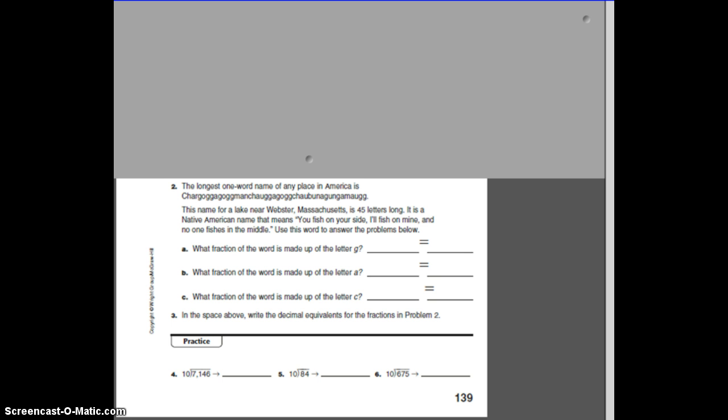So, what fraction of the word is made up of the letter G? In other words, if there are 45 letters, how many of them are G? So, 45 letters, that will be our denominator.